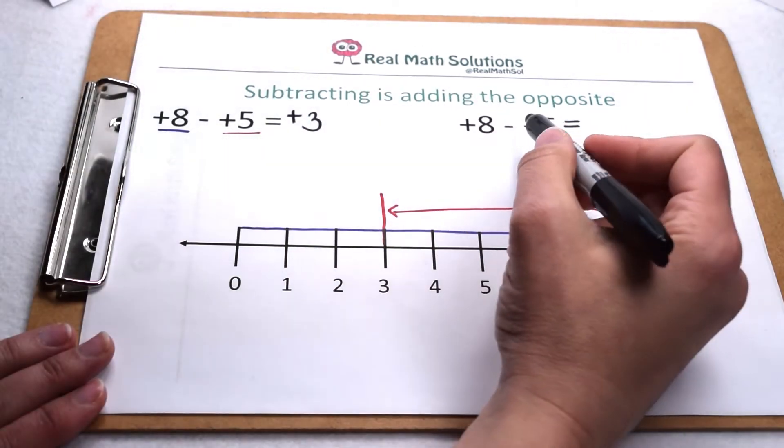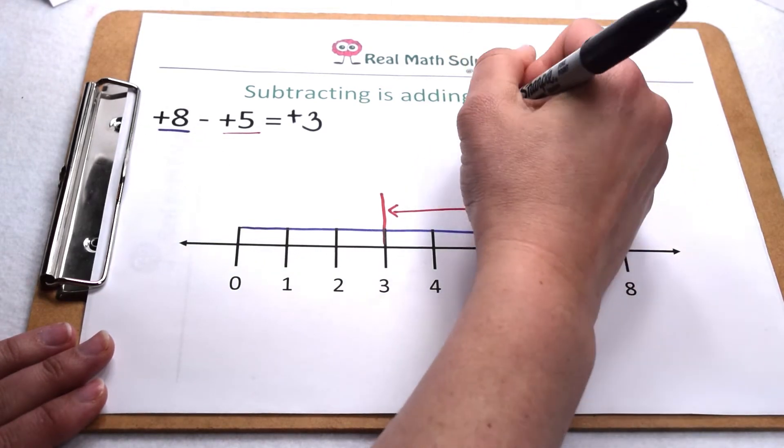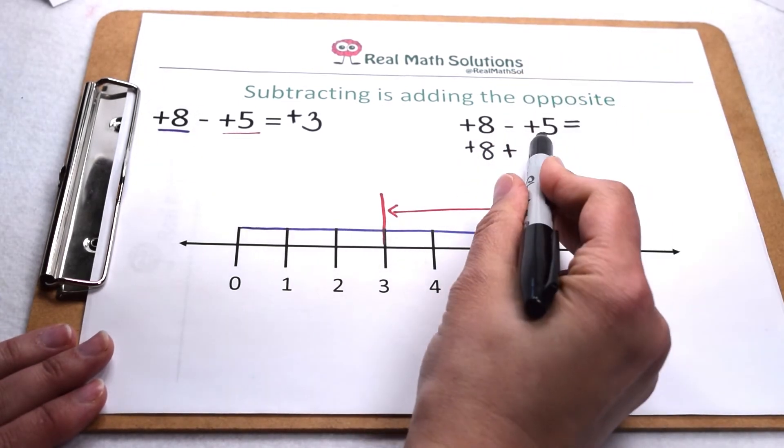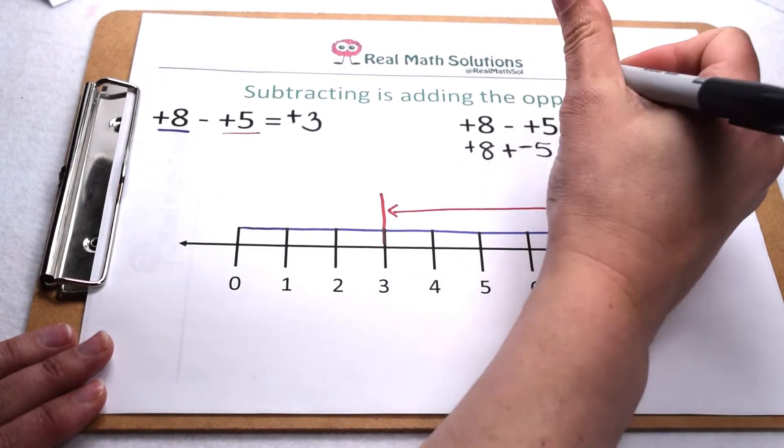Now, subtracting can be thought of as adding the opposite. That means I could rewrite this subtraction problem, keep my positive 8, change my subtraction to addition, and take the opposite of positive 5, which would be negative 5.